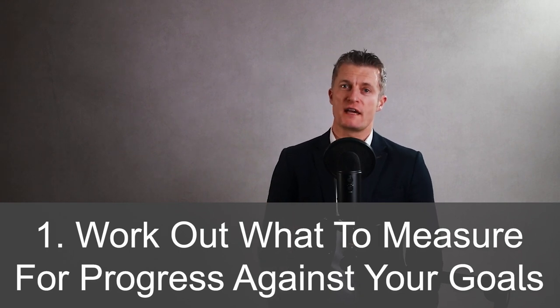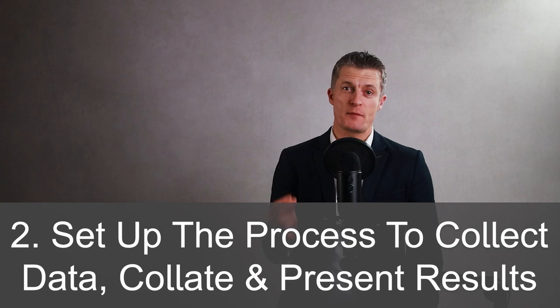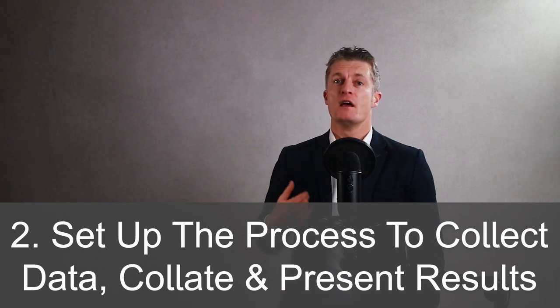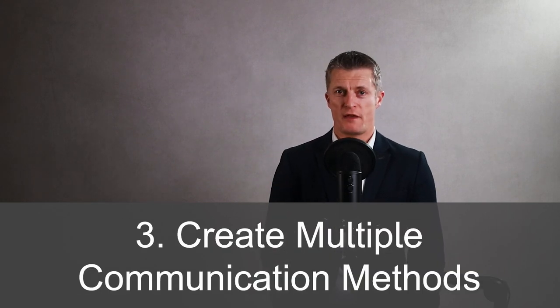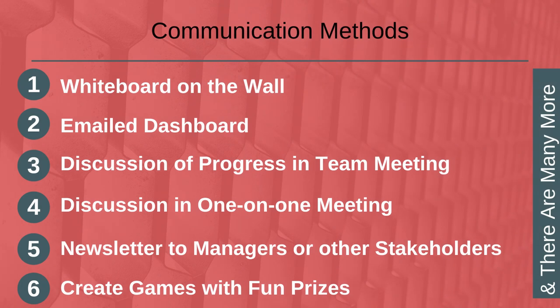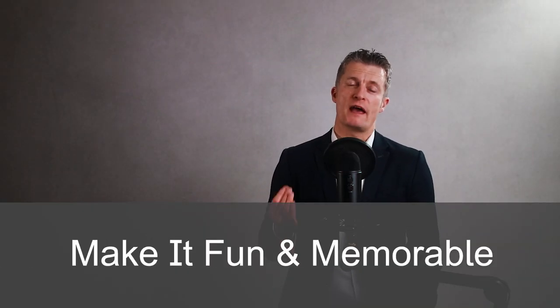Some steps to use visibility to drive team accountability include: firstly, work out what to measure for progress against your key goals. Secondly, set up the processes to collect data, to collate it and then to present the results to the team. Third, create multiple communication methods — for example, use a whiteboard on a wall, email out a dashboard, discuss progress in team meetings or in one-on-one meetings. It could be newsletters to managers or other stakeholders, or creating games with fun prizes for reaching milestones along the way. There are so many ways to share progress — make it fun and memorable.